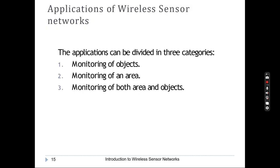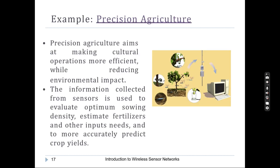Precision agriculture aims at making agricultural operations more efficient while reducing environmental impact. Soil quality, water level, and stem and leaf quality can all be easily monitored so that maintenance can be done at the micro level. The information collected from sensors is used to evaluate optimum sowing density, estimate fertilizer and other input needs, and more accurately predict crop yields.